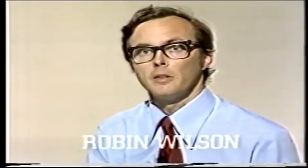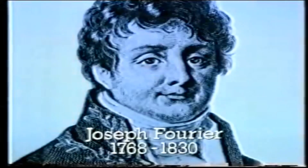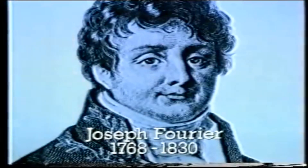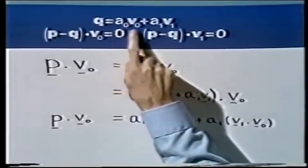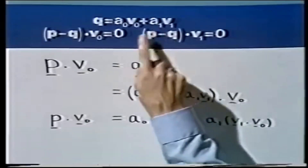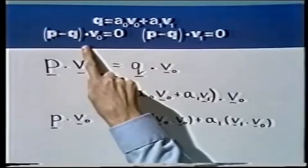Well, here's Robin. These coefficients A0 and A1 are very important and we're going to spend some time looking at them. They're actually called Fourier coefficients, after the French physicist Joseph Fourier, who introduced them while looking at the conduction of heat. How do we calculate them? We calculate them using the orthogonality relations. Here are the orthogonality equations and we want to calculate A0 and A1.